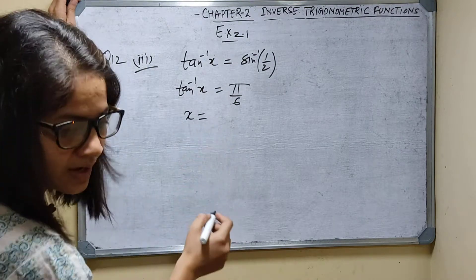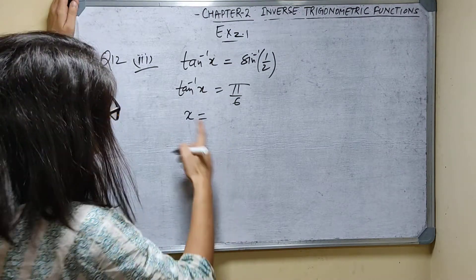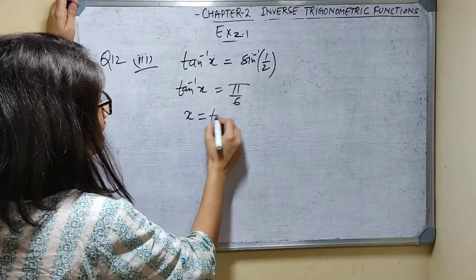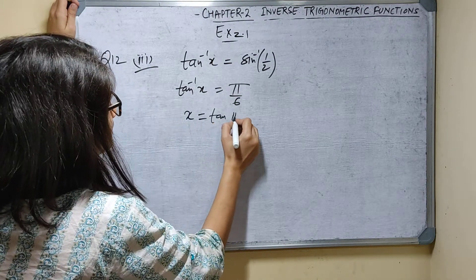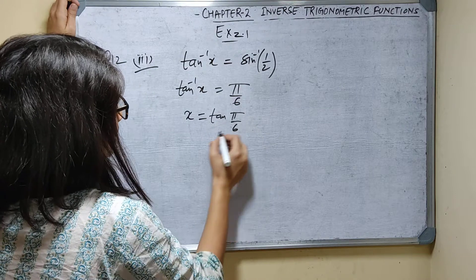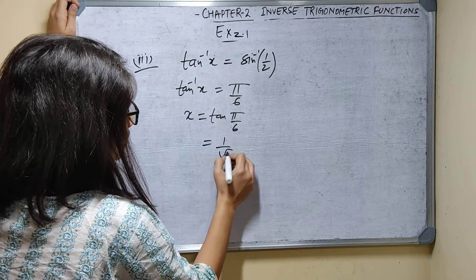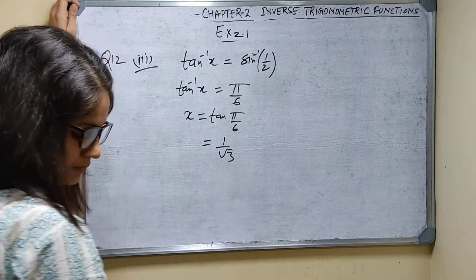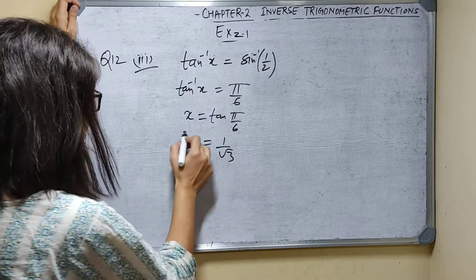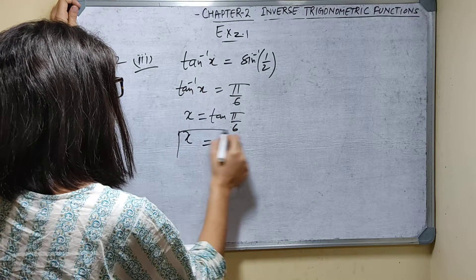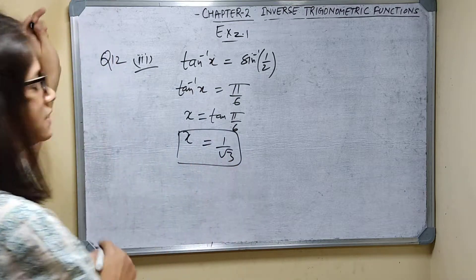So x equals tan of pi by 6. Tan pi by 6 means tan 30, which is 1 by root 3. So x value is 1 by root 3. This is done.